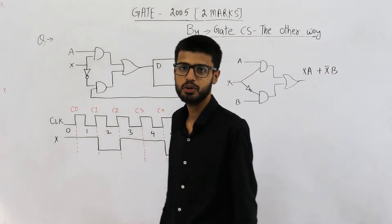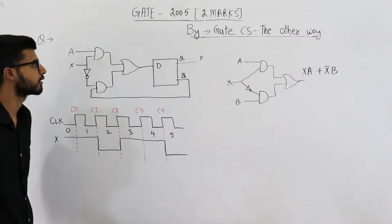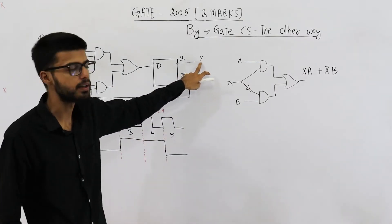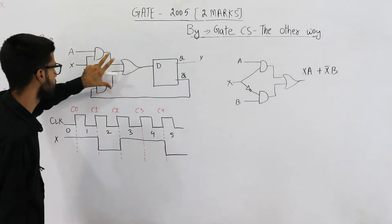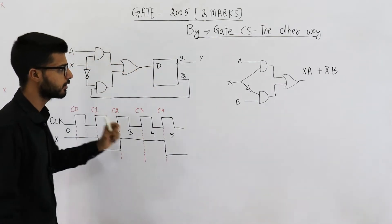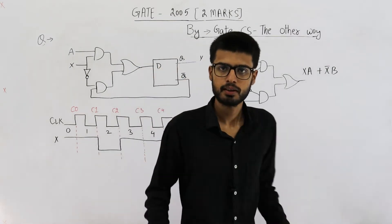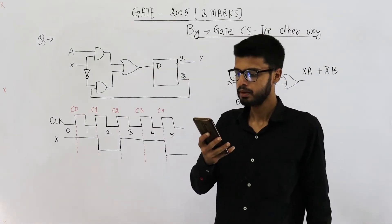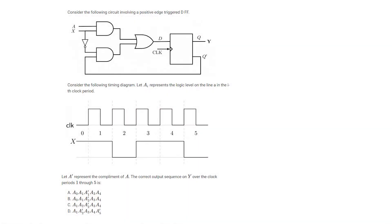Hello dear people. The question is from GATE 2010 exam, for two marks. You are required to find the output Y. This is a D flip-flop and this circuit is used at input D. Consider the following circuit involving a positive edge triggered D flip-flop and the following timing diagram. Let Ai represent the logic level on line A in the ith clock period, and A' represent the complement of A. The correct output sequence Y over clock periods 1 through 5 is?